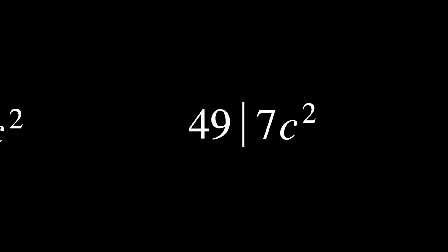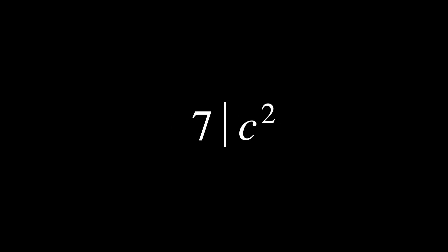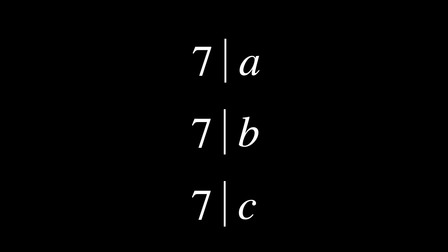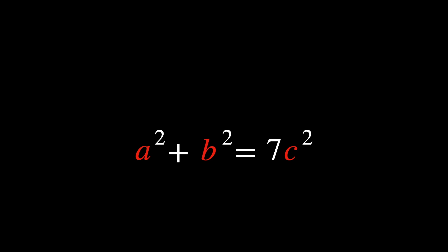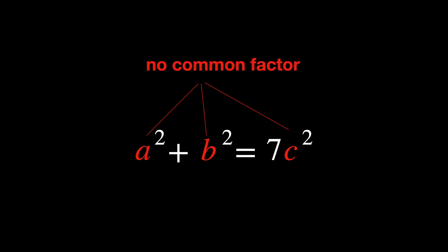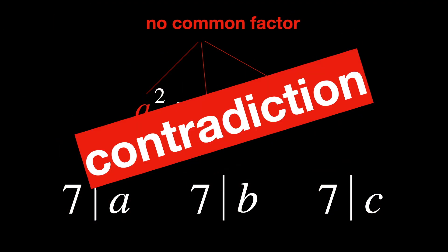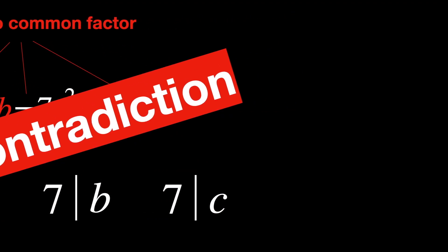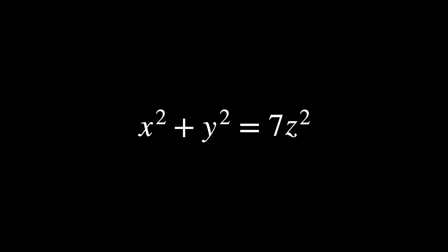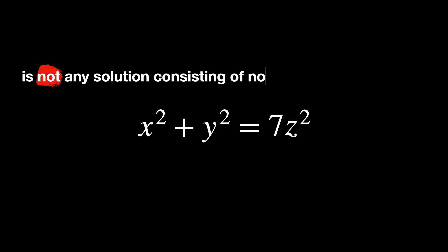Therefore c squared is a multiple of 7, and this implies that c itself is a multiple of 7. Specifically, a, b and c share a common factor of 7. This is a contradiction of something we said earlier — that in the equation a squared plus b squared equals 7c squared, we supposed that a, b and c are integers with no common factor. But here we just proved that they actually have a common factor. Because of this contradiction, we have to conclude that there is no solution to x squared plus y squared equals 7z squared consisting of non-zero rational numbers.